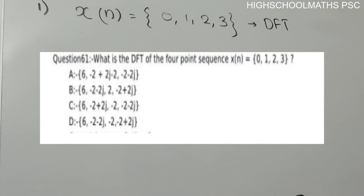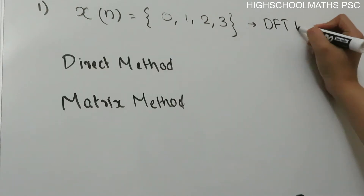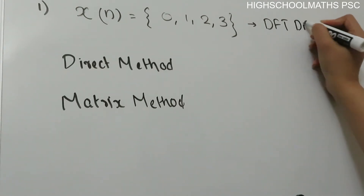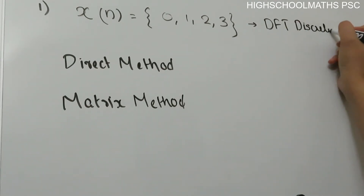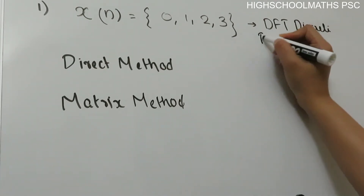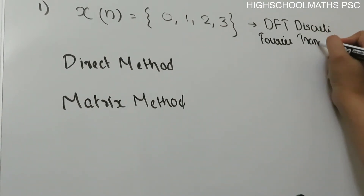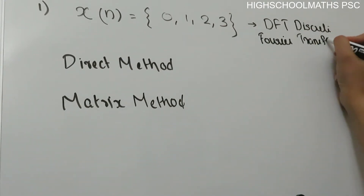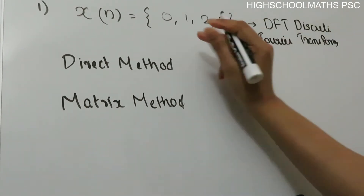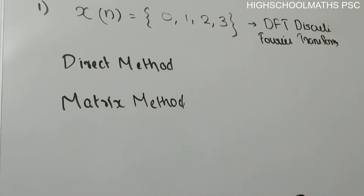What is the DFT of the 4-point sequence x(n) equal to the set {0, 1, 2, 3}? We have 4 options. We have to find the DFT of this 4-point sequence. DFT stands for Discrete Fourier Transform. We will convert the 4-point sequence to the DFT.